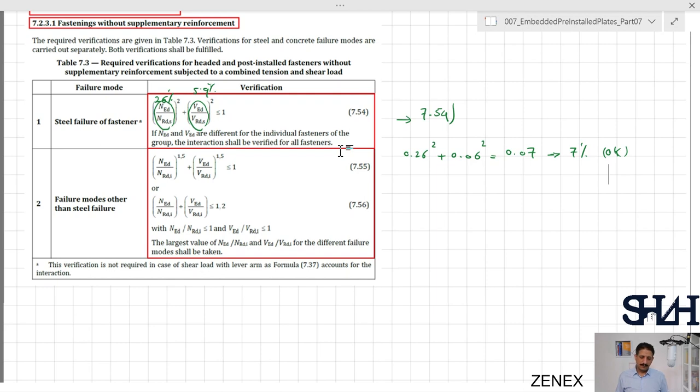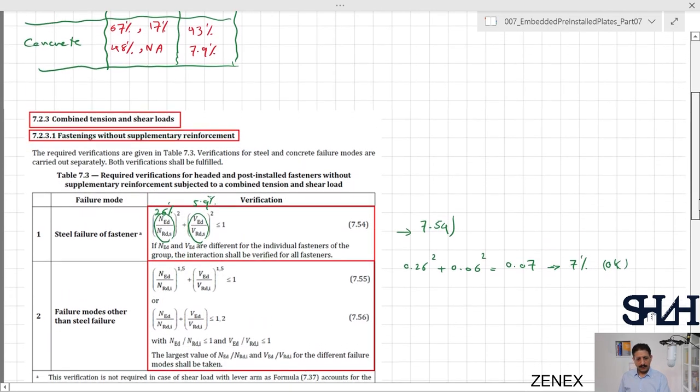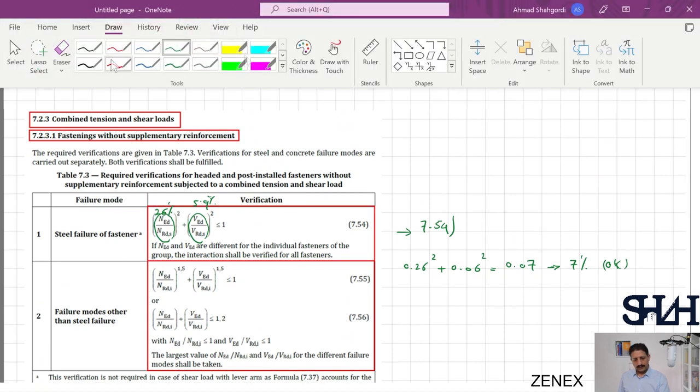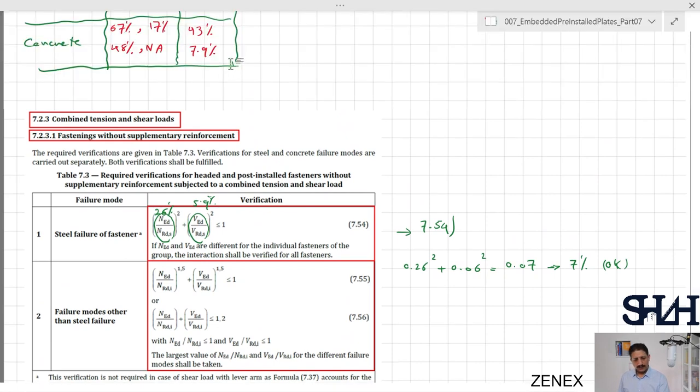Here we have two equations: 7.55 which is non-linear interaction and also linear interaction which is given as 7.56. Engineering judgment would be the best way to decide which one should be taken. If you go with equation 7.56, then the limit is 1.2. It doesn't mean that you can have N_Ed over N_Rd greater than one.